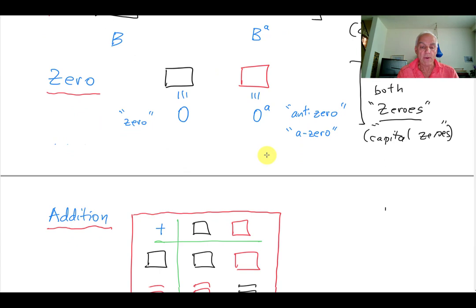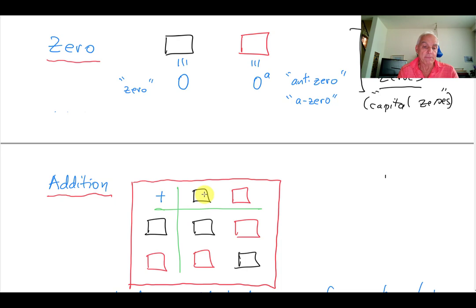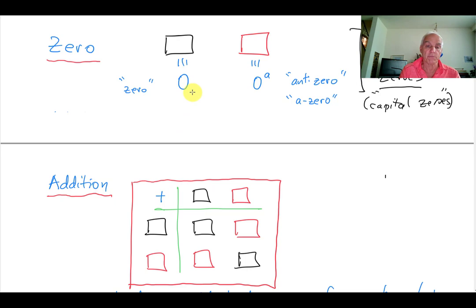What can we do with just zeros? Well, we can add them. Things are a little more complicated now because we have two kinds of fundamental zero objects, so we have to specify addition for all possible pairs. A black empty box plus a black empty box is another black empty box. A red anti-zero plus a red anti-zero is a black box, or zero. Black plus red equals red, and red plus black equals red. So: zero plus zero is zero, zero plus anti-zero is anti-zero, anti-zero plus zero is anti-zero, and anti-zero plus anti-zero is zero.